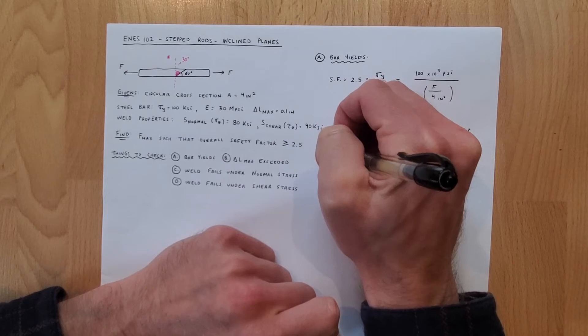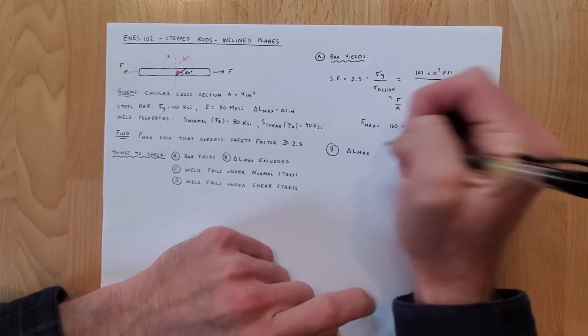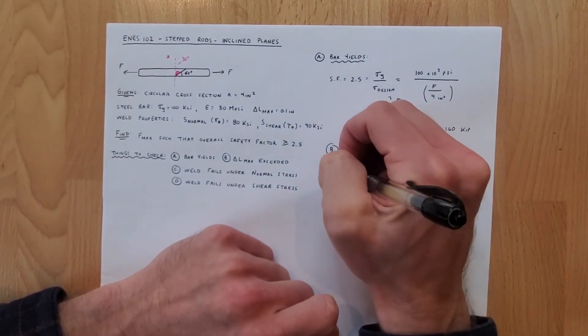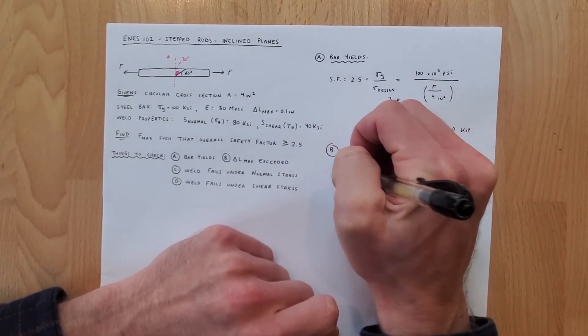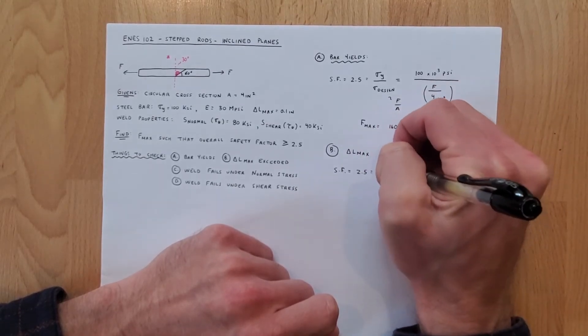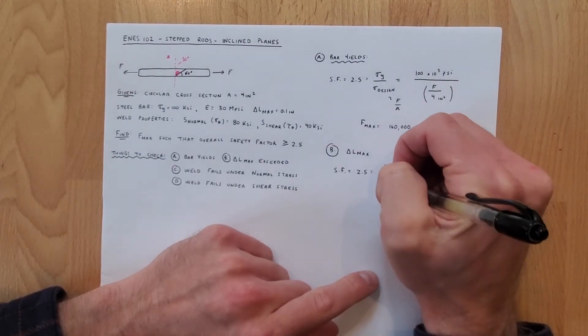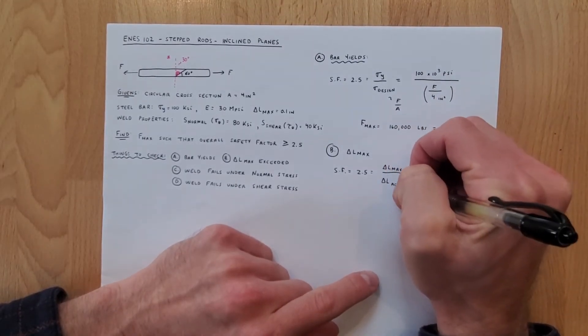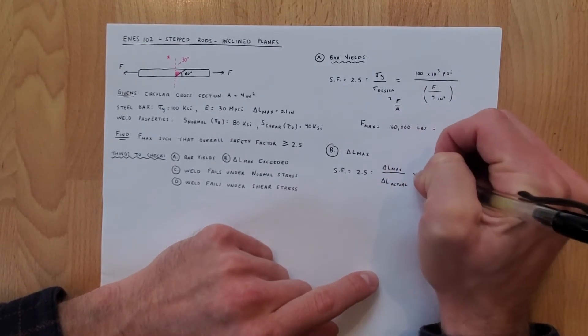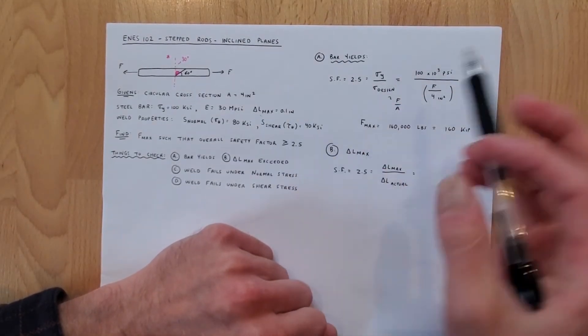Now let's check condition b which is that delta l max is exceeded. So we know that the safety factor again is equal to 2.5 which is going to be equal to our change in l max over the change in length actual.